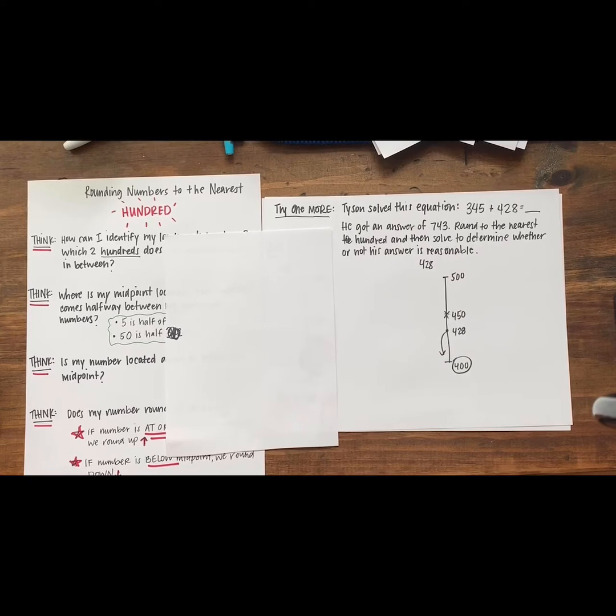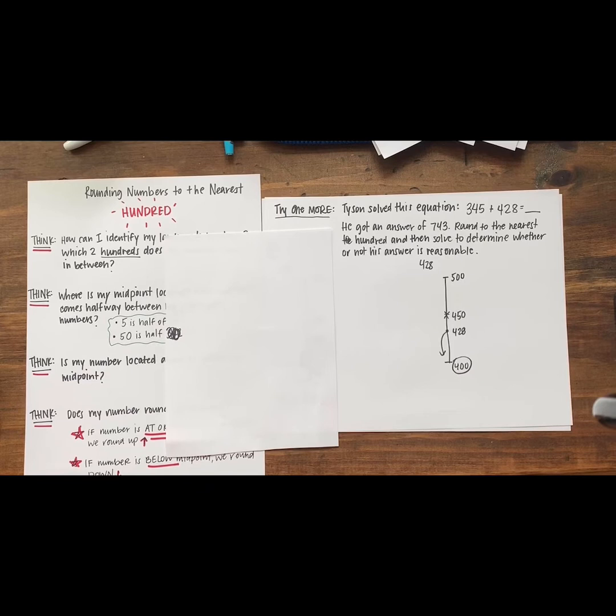Let's take a look at the try one more. Tyson solved this equation 345 plus 428 and he got an answer of 743. Round to the nearest hundred and then solve to determine whether or not his answer is reasonable.